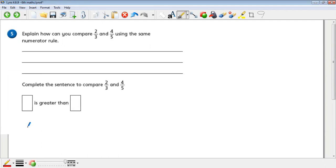Explain how you can compare two thirds and four fifths using the same numerator rule. Now the problem you've got is that they're not actually the same, so you're going to have to make them the same. The easiest way to do this is to change the two thirds, because if I try and make the four of the four fifths become two, the problem is because five is an odd number, you're going to end up with two over 2.5. That's not something you really want to do, so we're going to have to change the two thirds.